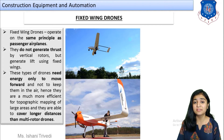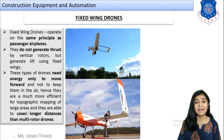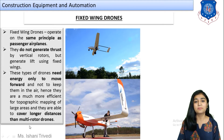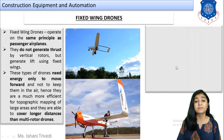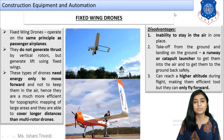One disadvantage is that fixed wing drones can move only forward. However, they are much more efficient for topographic mapping of larger areas, as they are able to cover larger distances compared to multi-rotor drones, which have limited area coverage.